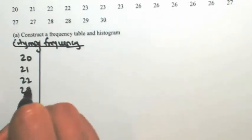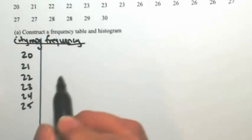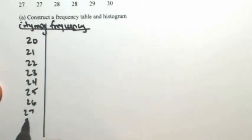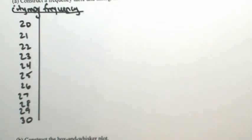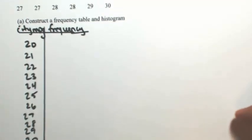So 21, 22, 23, 24, 25, 26, 27, 28, 29, 30. Now at this point we're just going to go through the list and see how many of each we have. Starting with 20.